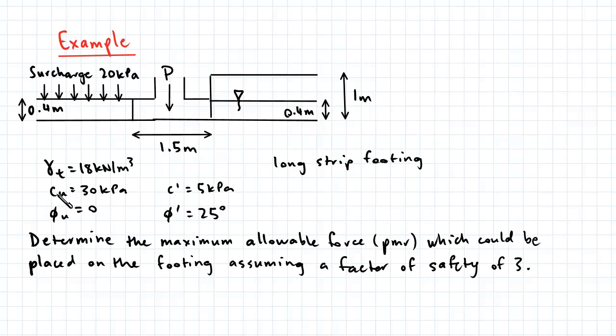Now if you note here we're given two sets of data for the cohesion and angle of friction. So we have an undrained cohesion of 30 kPa and an undrained angle of friction of 0, as well as a drained cohesion of 5 kPa and a drained angle of friction of 25 degrees.